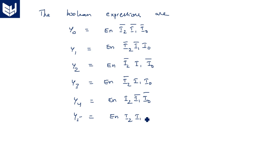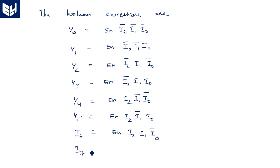Continuing the Boolean expressions: y4 equals enable AND i2 AND i1-bar AND i0-bar (1,0,0); y5 equals enable AND i2 AND i1-bar AND i0 (1,0,1); y6 equals enable AND i2 AND i1 AND i0-bar (1,1,0); and y7 equals enable AND i2 AND i1 AND i0 (triple 1). These are the Boolean expressions for the 3-to-8 decoder outputs.